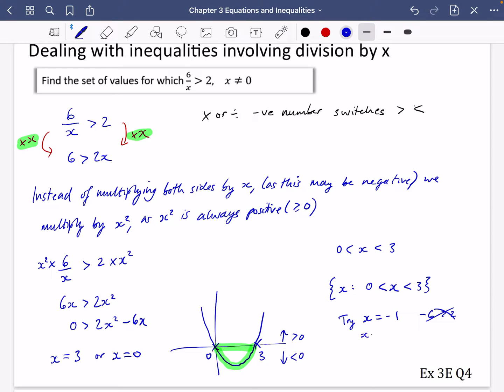If I tried a number that was bigger, like x equals 4, I would have 6 divided by 4, which is 1.5. And it would say that 1.5 is bigger than 2, which also isn't right. So those numbers outside the range don't work, and if you tried any numbers inside the range, they would work.